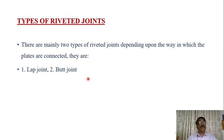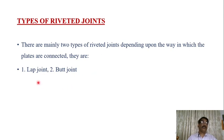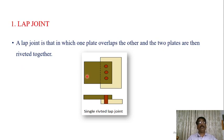There are mainly two types of riveted joints depending on how the plates are connected: lap joint and butt joint. In a lap joint, one plate overlaps the other and the two plates are riveted together. In the sketch, one plate and another plate are overlapping with each other and riveting is done through the top and bottom plate.